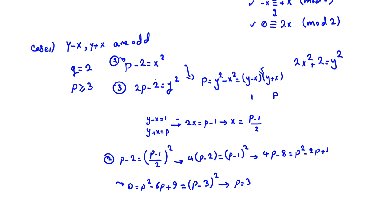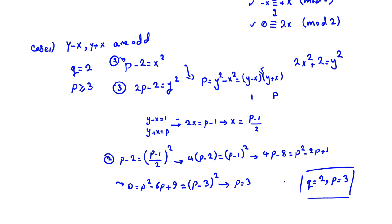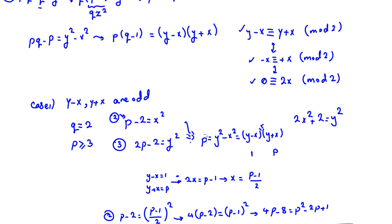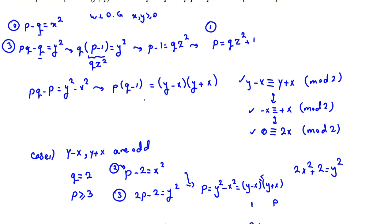Let's verify the two main equations: 3 minus 2 equals 1 equals 1 squared. And 2 times 3 equals 6, minus 2 equals 4 equals 2 squared. So one answer in Case 1 is Q=2, P=3. Case 1 is finished.